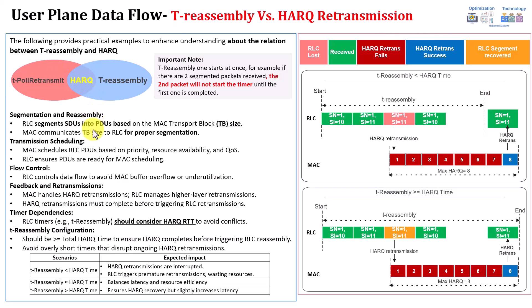This long example shows the relation between T-Reassembly and the HARQ retransmission. T-Reassembly, as highlighted in the previous section, works at the RLC receiver side during RLC — usually during segmentation. HARQ operates thereafter during the HARQ retransmission. So what is the relation between both of them? Here is a visualized example.